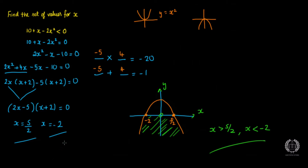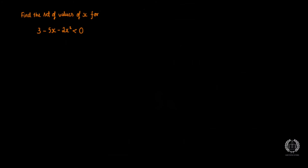If you have any questions or doubts, put them in the comment section and I'll reply. Now here's a practice question for you to try. Pause the video, attempt it, then play it back to check. The question is: find all values of x for 3 − 5x − 2x² < 0. I'll first write 3 − 5x − 2x² = 0, then rearrange to 2x² + 5x − 3 = 0.